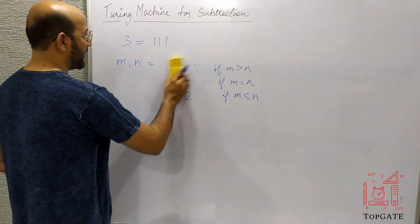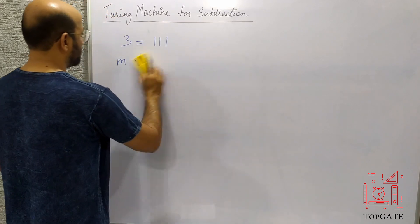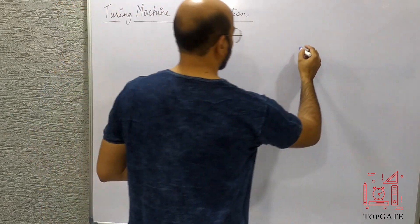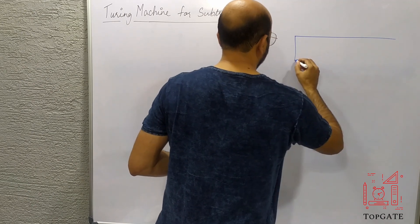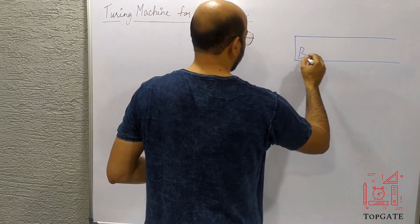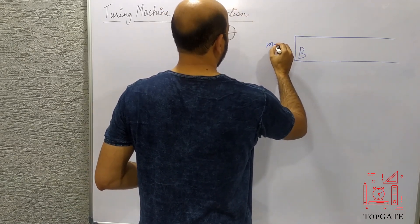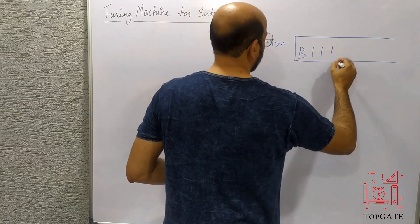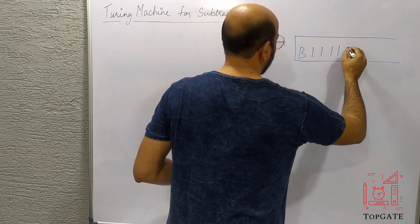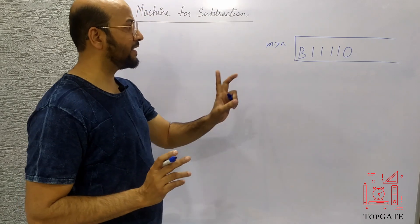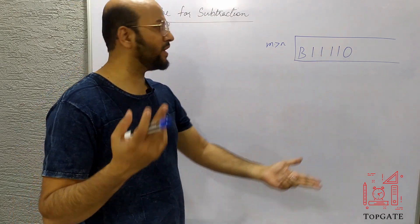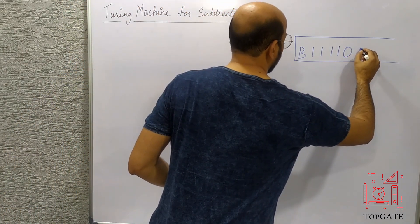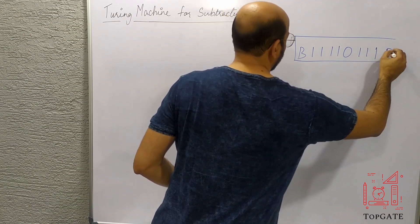So let us take some string onto the input tape and then start designing the Turing machine. I will take all three cases one by one and show you how all three cases can be incorporated on a single Turing machine. Onto the input tape I have a blank, and then suppose I am taking the first case as M is greater than N. So we have 4 ones, followed by a 0 in between that is a separator. This 0 is acting as a separator — I can take anything here other than 1s. Again I will take some 1s here, suppose 3 ones, followed by certain blanks.